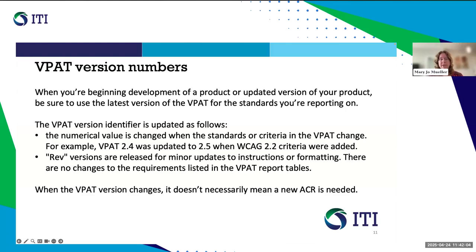The VPAT versions change over time due to changes in standards, which is indicated with an uptick of the numeric version number. For example, VPAT 2.5 was the version used when WCAG 2.2 criteria were added. Versions marked with REV, like the upcoming 2.5 REV, don't have any requirements changes — they indicate editorial or formatting changes in the VPAT. If you have tooling that automatically builds your ACRs, you may want to make updates in preparation for filling it in. Noting an update to the version number also lets you know when standards have changed that you might need to support, especially for new products or major updates.